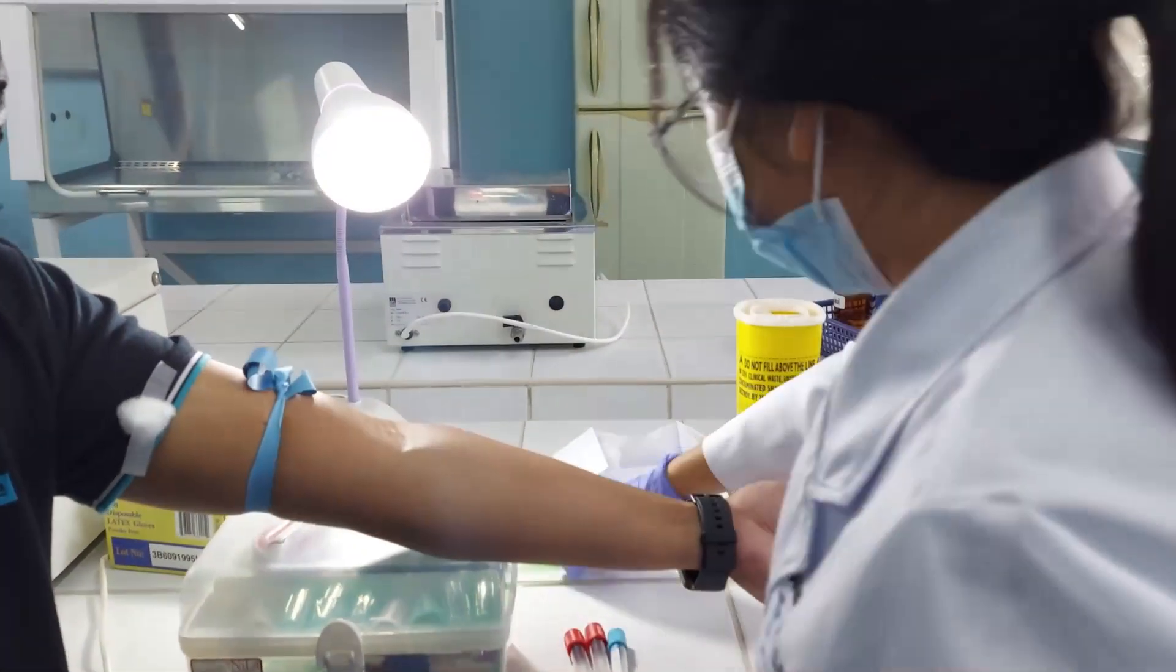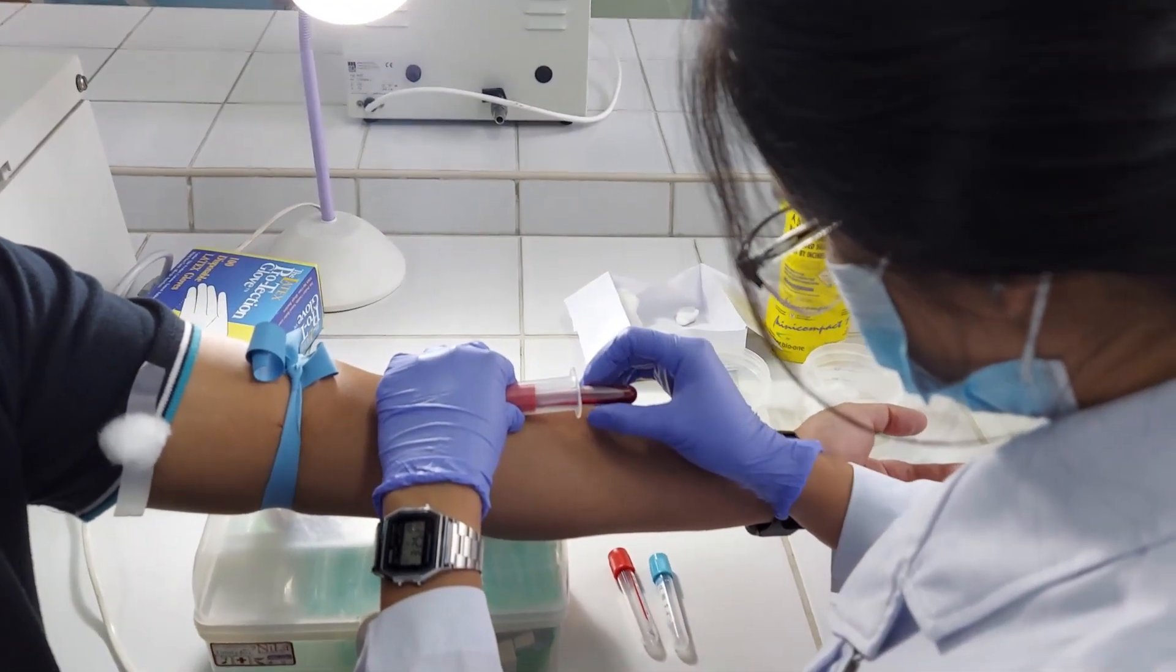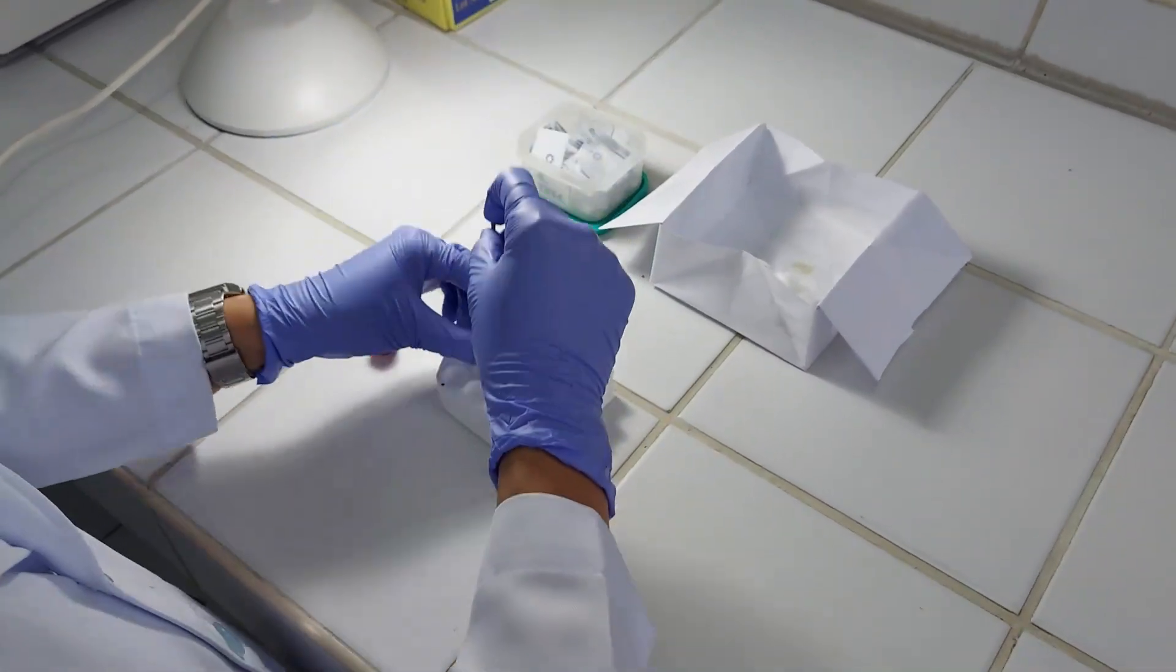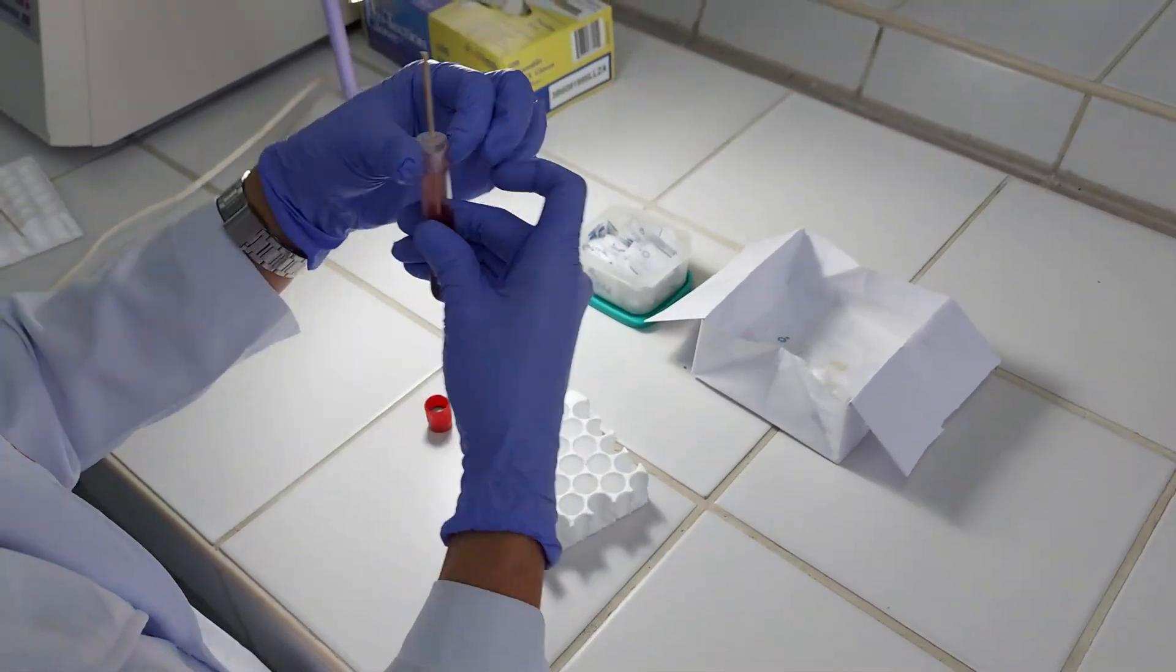For this method, you still have to collect 5 ml of non-anticoagulated whole blood using a red top tube. Place a coiled wire or an applicator stick into the tube and cover the test tube with a Nesco film.